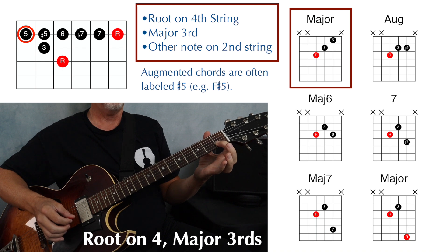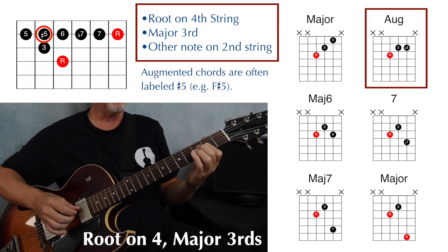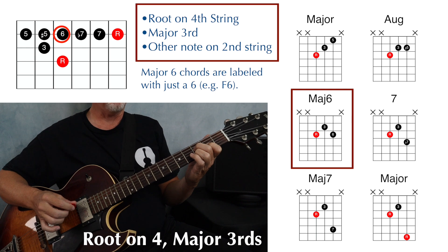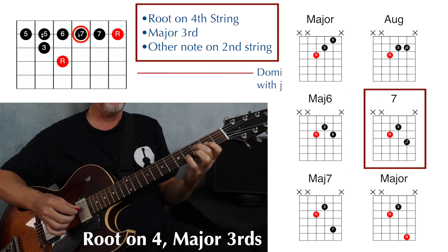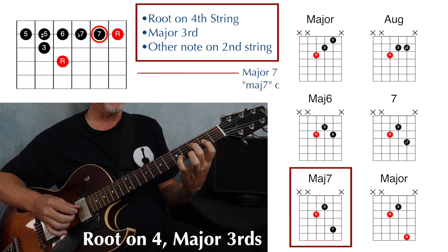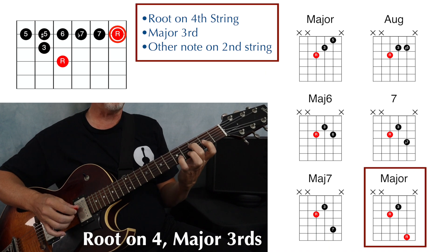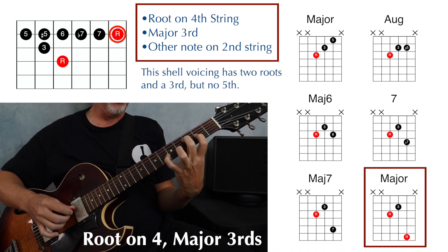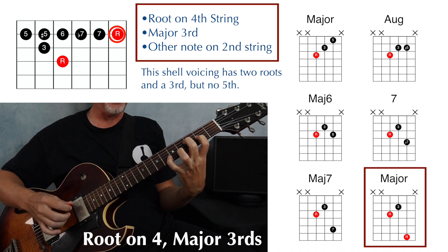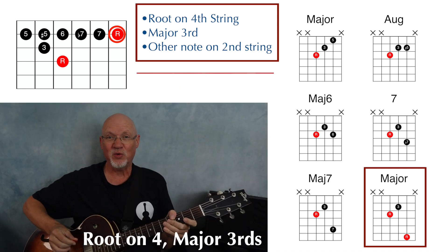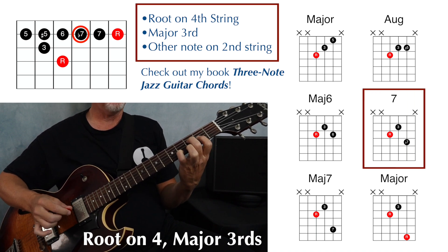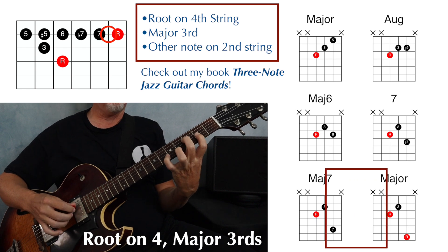If I change that note on the second string to the sharp five, I have an augmented triad. Move it again, I have a major sixth chord — F6. Move to the flat seven, I have a dominant seven chord — F7. Move that second string note one fret higher, I have an F major seven. And if I move it again, I have another F major chord, but this time with a root, third, and another root on top, which is a little hard to reach. Here's the entire sequence: major, augmented, major six, dominant seven, major seven, and a very stretchy major chord.